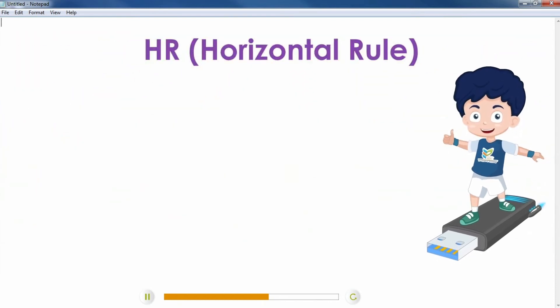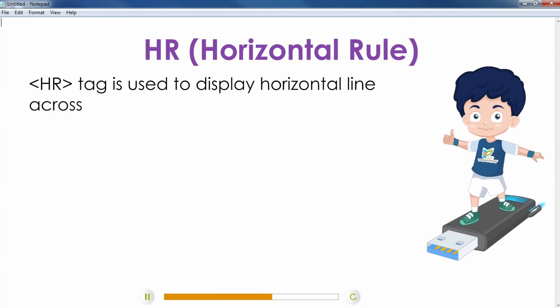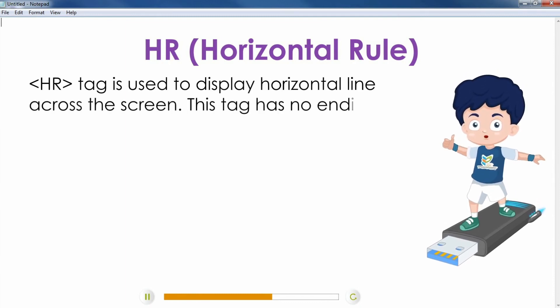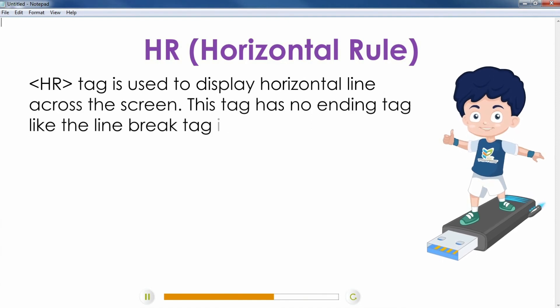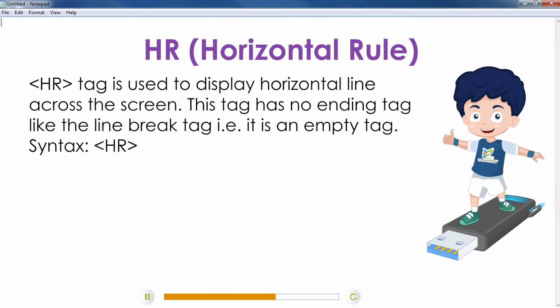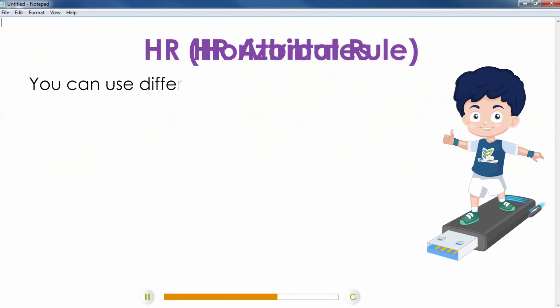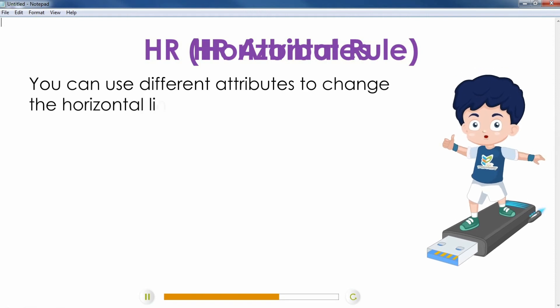Horizontal Rule: Hr tag is used to display horizontal line across the screen. This tag has no ending tag like the line break tag, that is, it is an empty tag. Hr Attributes: You can use different attributes to change the horizontal line accordingly.